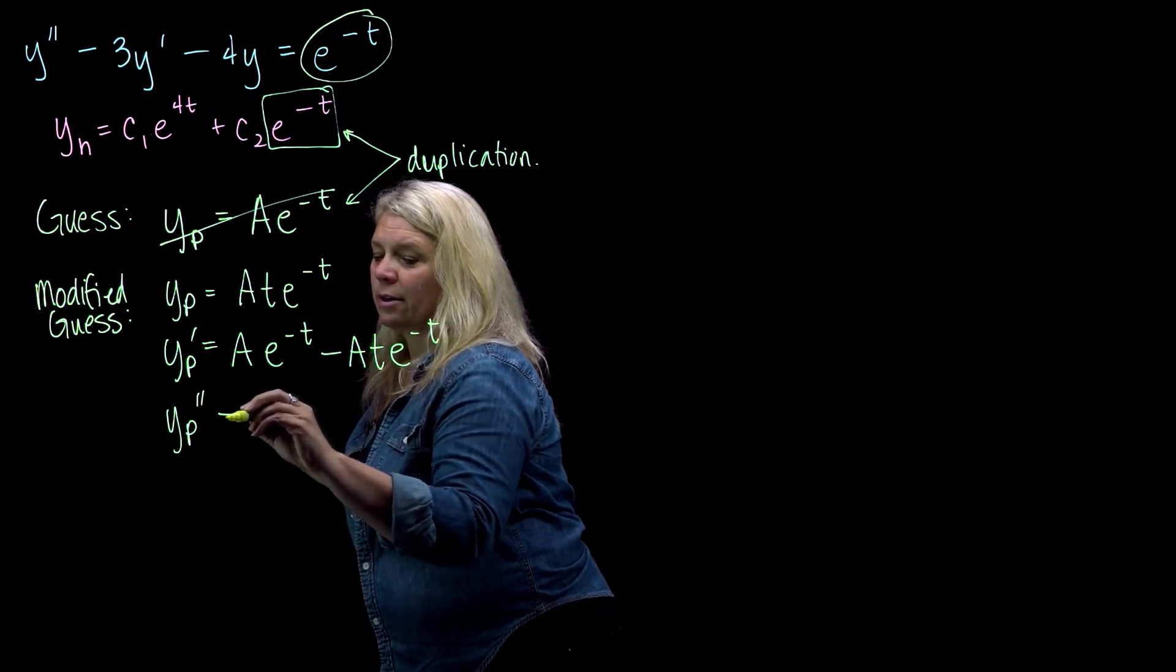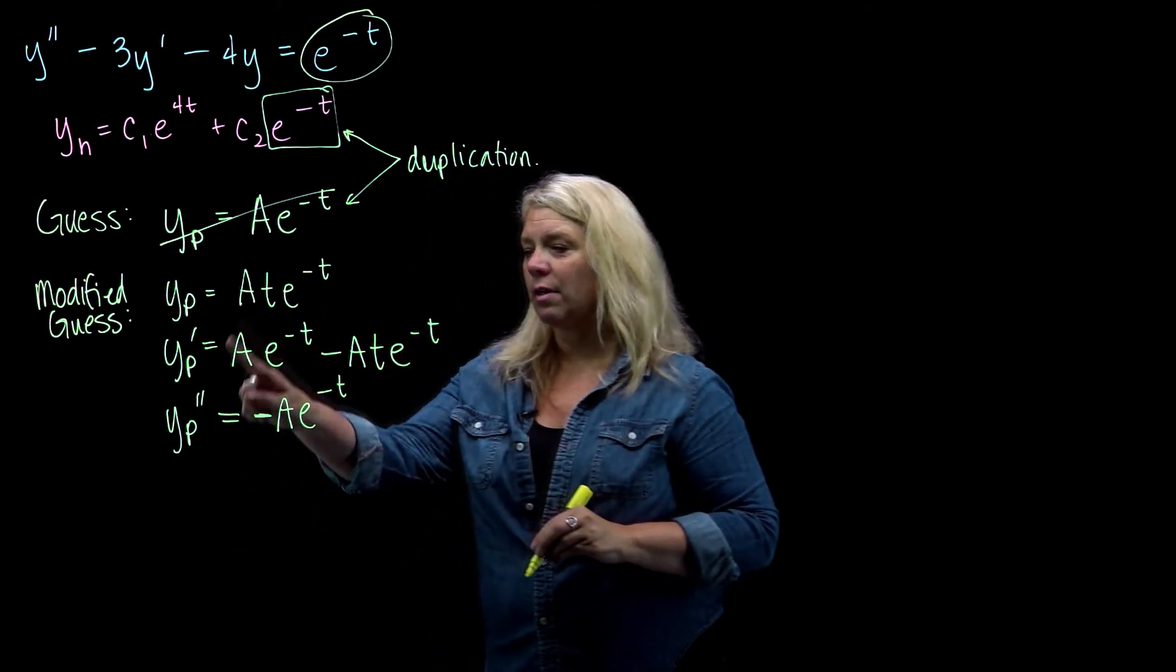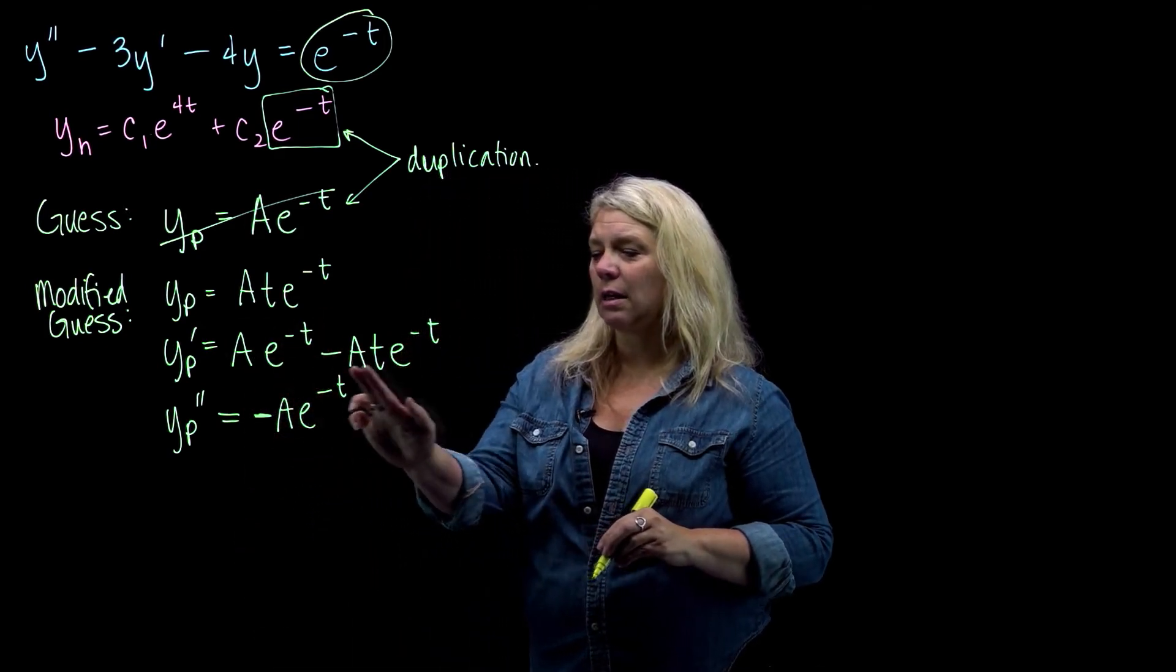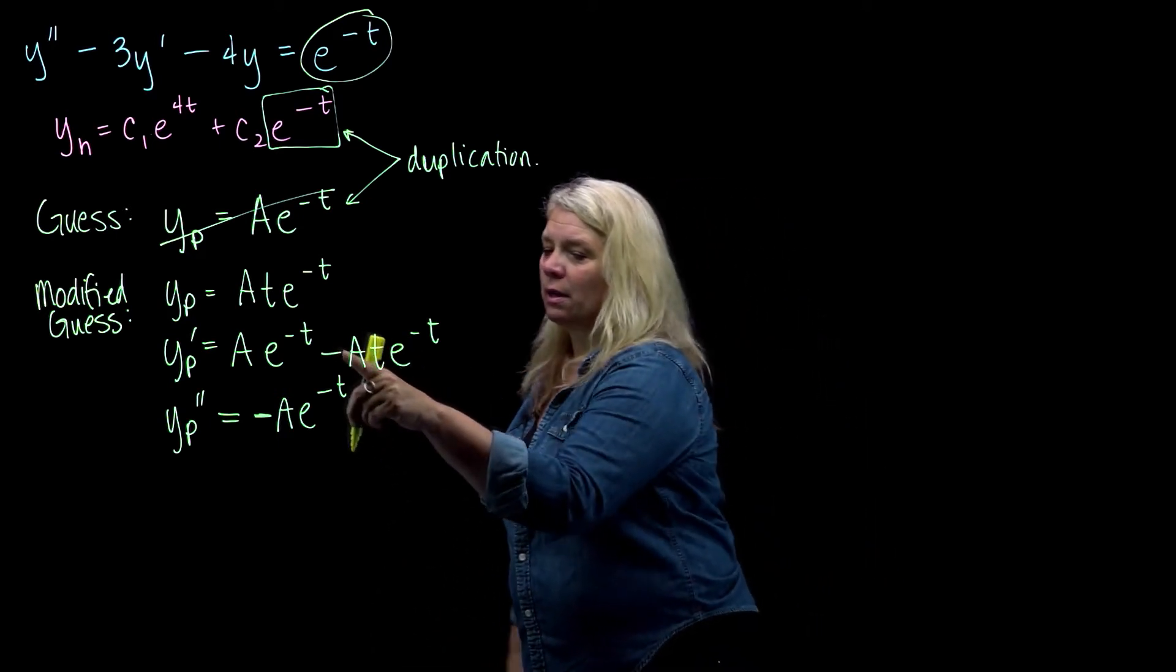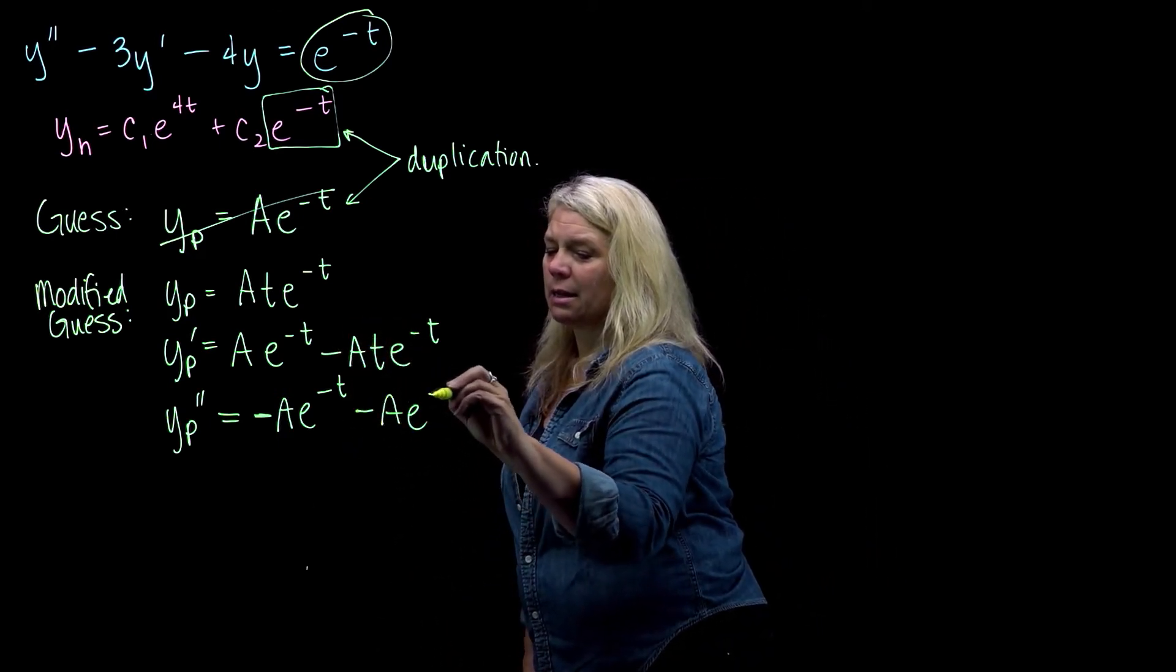And then the second derivative, negative A e to the negative t for the derivative of this first term. And then I'll need product rule on the second term. So the derivative of this first part here will just be minus A e to the negative t.